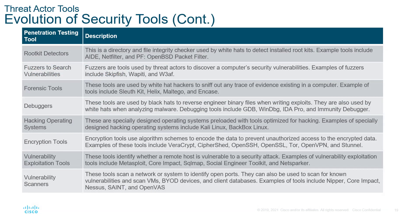Rootkit detectors include tools like AIDE or Netfilter. For fuzzing and searching vulnerabilities, some older tools are Skipfish, Wapiti, and W3AF — still used but not the most current. Forensics tools include Maltego, EnCase, Sleuth Kit — more realistically Autopsy, FTK, or Paladin. Debuggers are WinDBG or IDA Pro — IDA Pro being one of the biggest, also used for malware analysis. Hacking operating systems include Kali, BackBox, or Parrot.